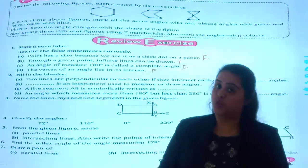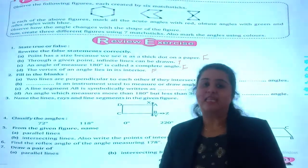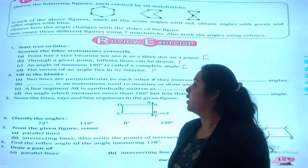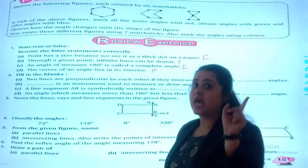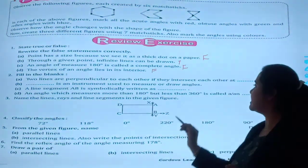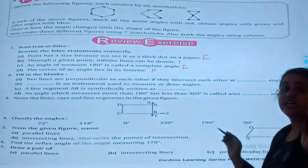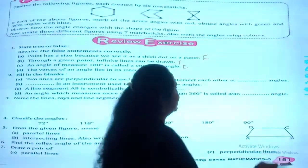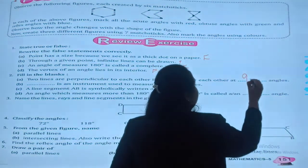So students, let's move to question number two. That is, fill in the blanks. The first blank is, two lines are perpendicular to each other. Yes? They intersect each other at dash angle. It is very easy. Yes, it is 90 degrees.